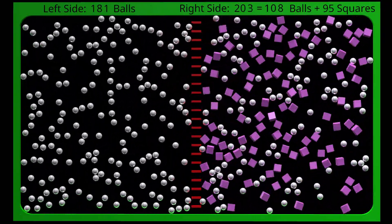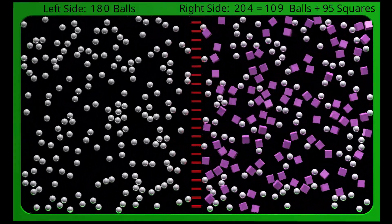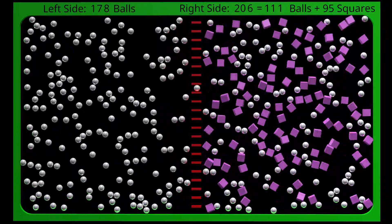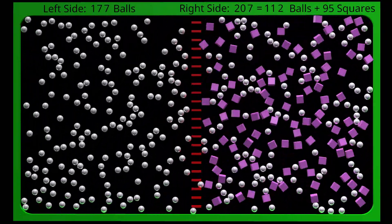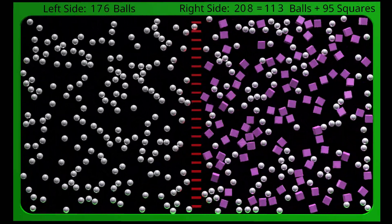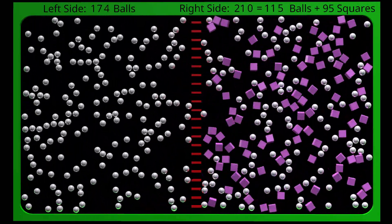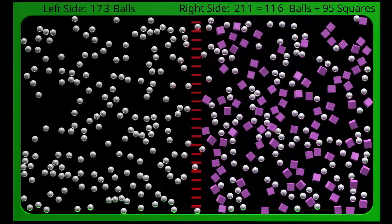As before, all the square particles are stuck on the right side of the barrier, but the balls are able to freely pass back and forth. As we approach an equilibrium condition, the total number of particles on the right will be greater than the total number of particles on the left.